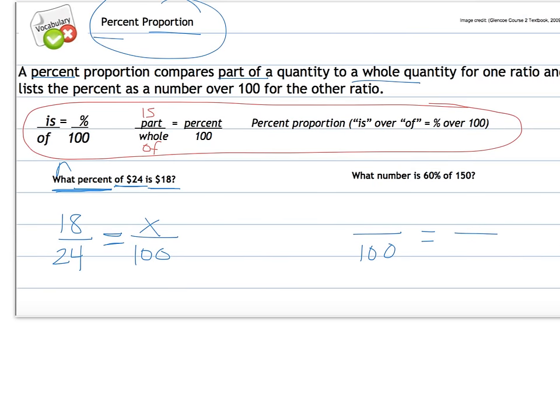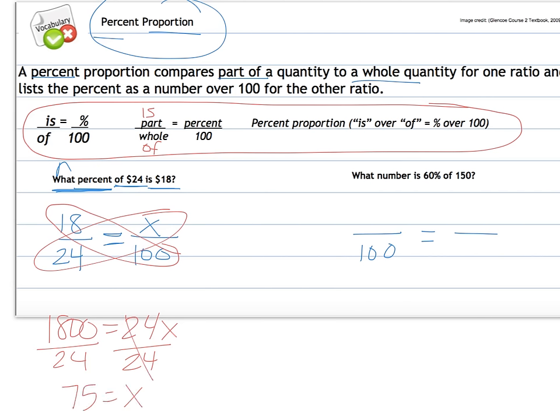So what I do then, just like you've done with cross products in the past, is you do your cross multiplication. So we have 1800 is equal to 24 times x. Now you have a regular one step equation. One step equation that you solve by undoing multiplication with division. And we find out that 75 is equal to x. So what that means is that $18 is 75% of $24.